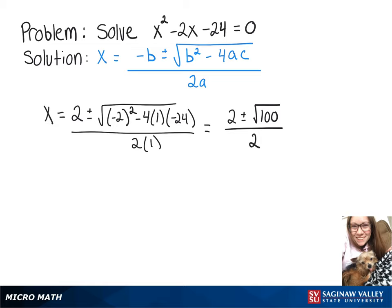Then we have 2 plus or minus 10 over 2. So one answer could be 2 plus 10 over 2, and our other answer could be 2 minus 10 over 2.